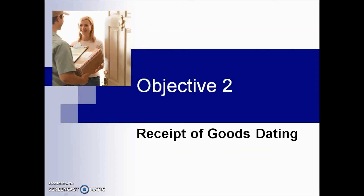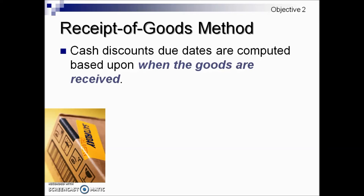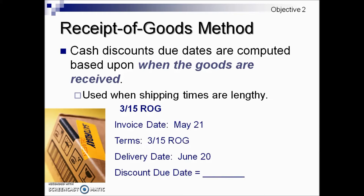We have another method of cash discounts: receipt of goods dating. Cash discount due dates are computed based upon when goods are received. This is generally used when shipping times are lengthy. It will be shown in terms with ROG, short for receipt of goods. With the use of the internet, the invoice may arrive immediately but the goods may take several weeks. Under the receipt of goods method, the buyer is given the time to receive and inspect the merchandise and then is allowed to benefit from a cash discount.